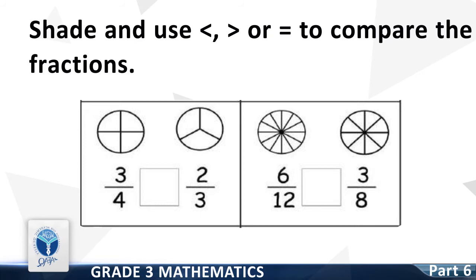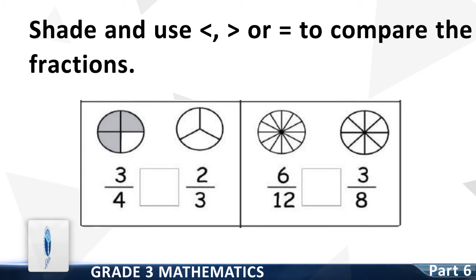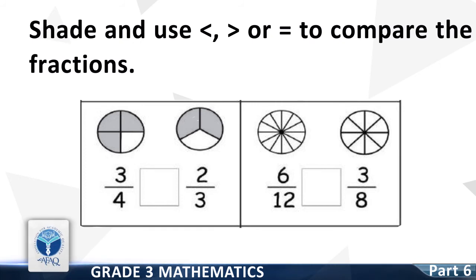Next, question: 3 by 4 and 2 by 3. Now shade the 3 by 4 fraction. Good, 3 shapes are shaded in 4. Now shade the 2 by 3 fraction. Good, 2 shapes are shaded in 3. Now put less than, greater than, or equal sign to compare the fractions. Good. The correct sign is greater than. It means 3 by 4 is greater than 2 by 3.